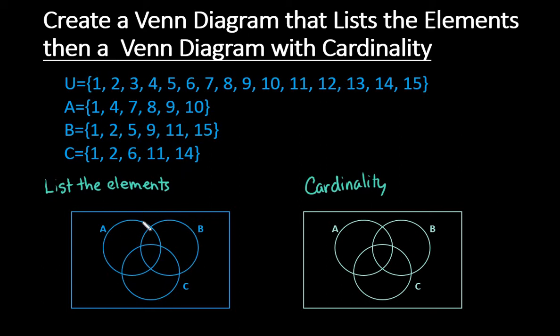So this blue Venn diagram is going to list all the elements and then we are going to do the cardinality on this one. So typically what I do is I just start with the universal set since it's the numbers 1 through 15. I start with the very first number 1 and I see in which sets does this go into. So we can see that 1 is in all three of the sets A, B, and C. So I would find the overlap of all three sets and I would write the number 1 right there.